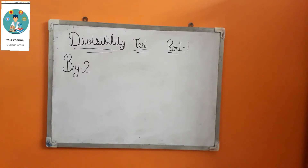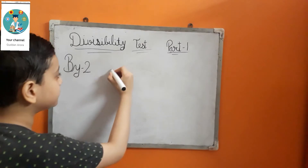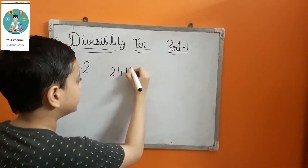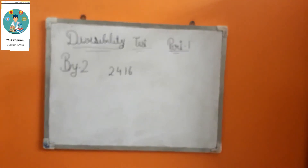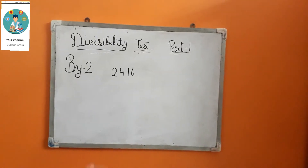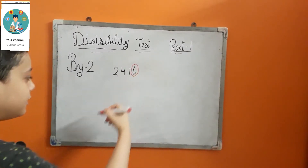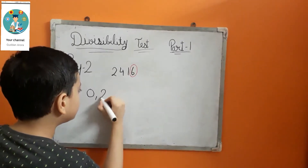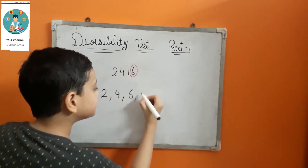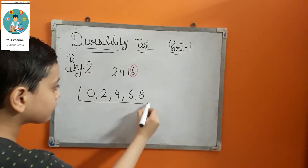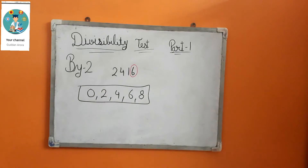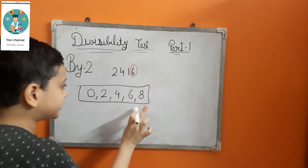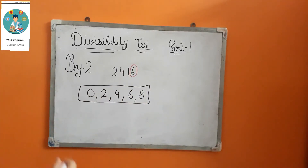First we will discuss divisibility by 2. I am taking an example: 2416. In divisibility by 2, we have to check the ones digit — if it is even, or you can say if it is 0, 2, 4, 6, or 8. If it is an even number, then it is divisible by 2.